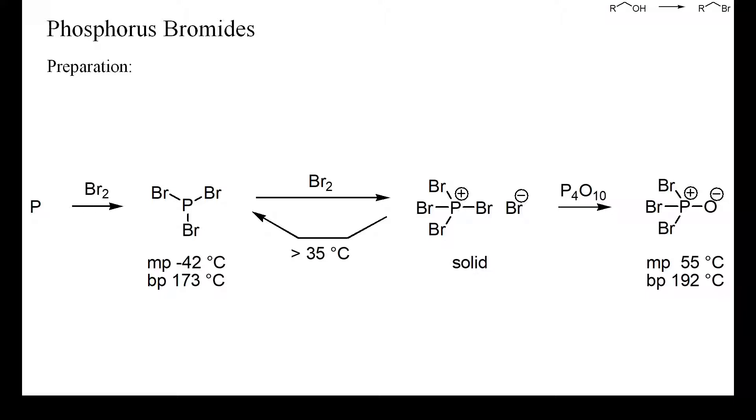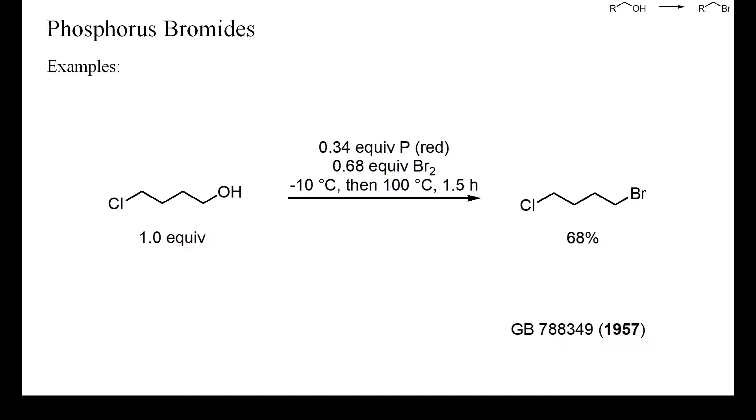This is one older example where phosphorus bromides were generated in situ from the elements, in the presence of an alcohol. No displacement of chloride by bromide occurred.